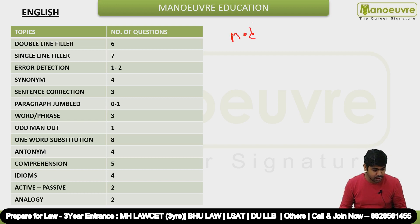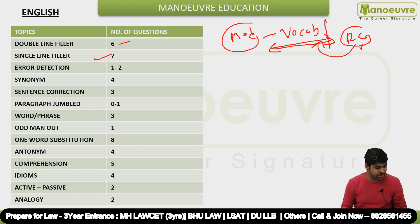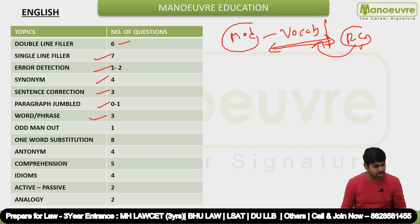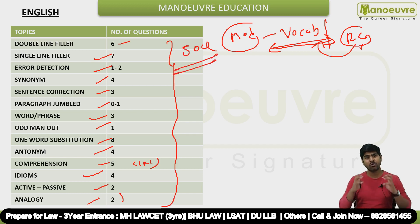First section is English. I would range it as moderate level. This year's paper was vocab-oriented, and the RCs were mainly vocab-oriented RCs. Question breakdown: double line fillers approximately six questions, single liner seven questions, error detection one to two questions, synonyms four questions, sentence correction three questions, paragraph jumble in some slots zero to one, word and phrase three questions, odd man out one question, one word substitution eight, antonyms four, comprehension five questions, one RC, idioms four questions, active-passive two questions, analogy two questions.